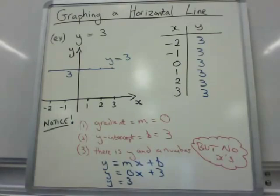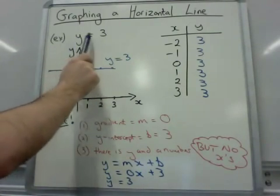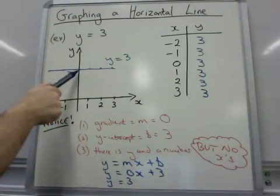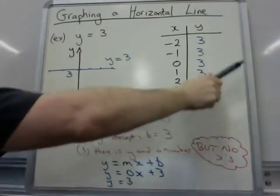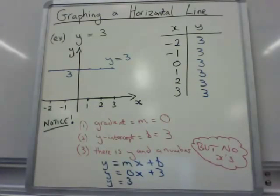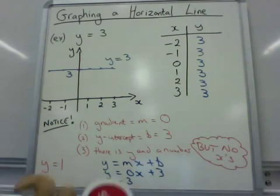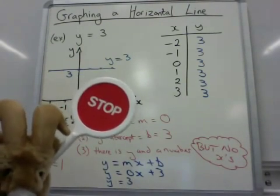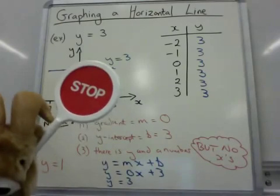If you get this straight away—y equals 3, you know it's a horizontal line, it cuts through 3—you can just draw this. You don't have to bother doing the table. Let's see if you really know. Can you put on this graph where y equals 1 will be? Stop the video, graph y equals 1, then see if it's correct.